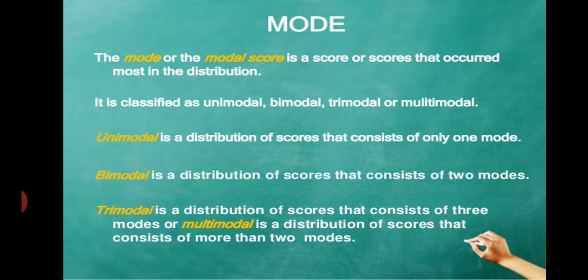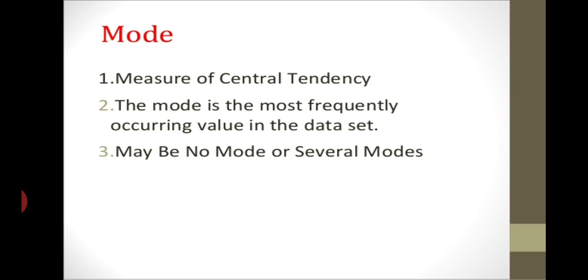Bimodal means the value is repeated two times, or the data has two modes. Trimodal means the data has three modes, or a value occurs three times. Multimodal means the value occurs more than three times, or the data has more than three modes — that is known as a multimodal type of mode.